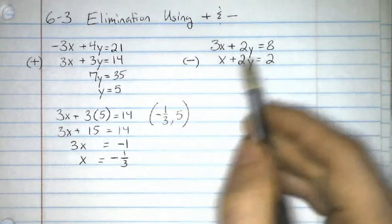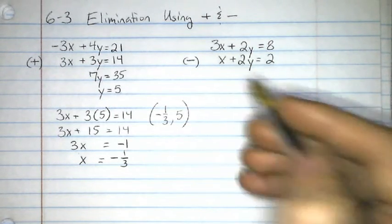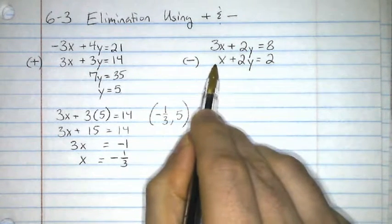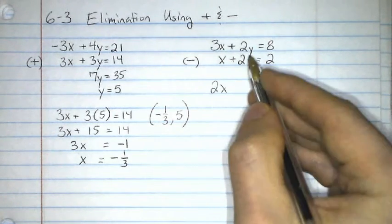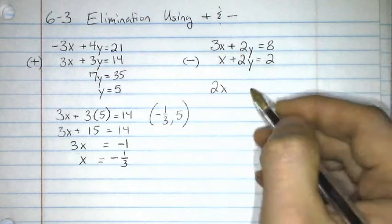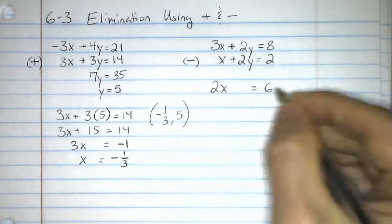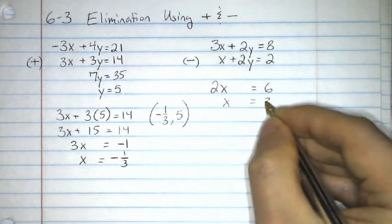On this side, we're using subtraction because I have the same exact signs here. 3x minus an x. If there's no number there, that's 1x. 3x minus an x, that's going to be 2x. 2y minus 2y, they cancel out, no y's. 8 minus 2 is 6. Now, I divide both sides by 2. I end up with x equals 3.